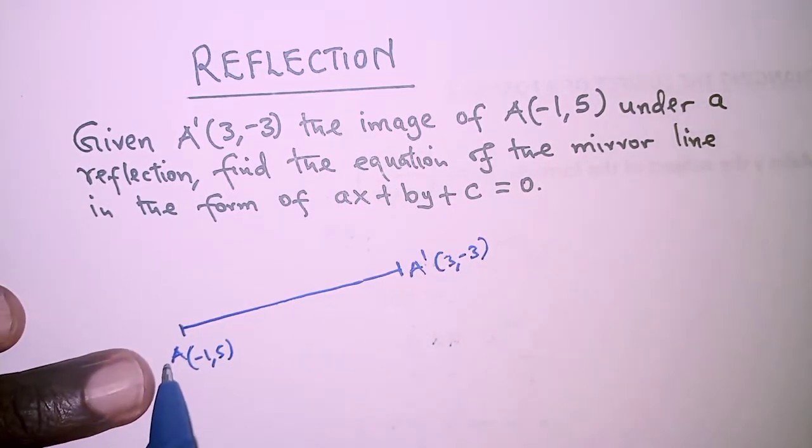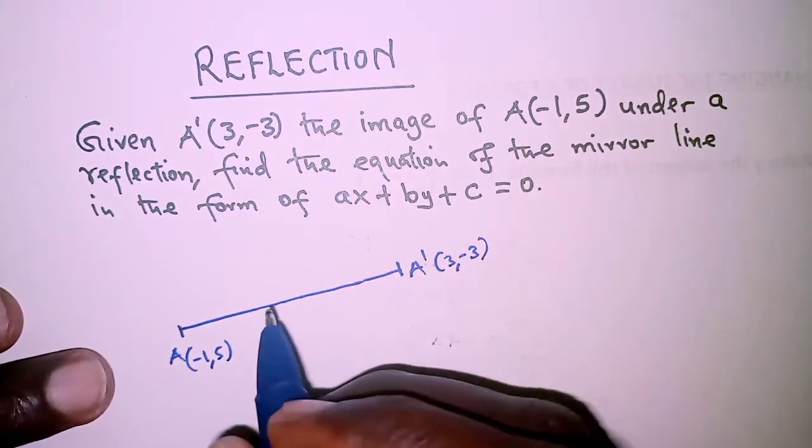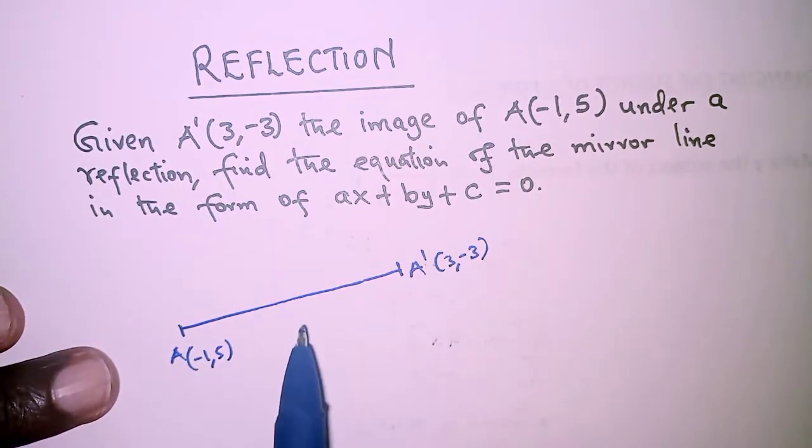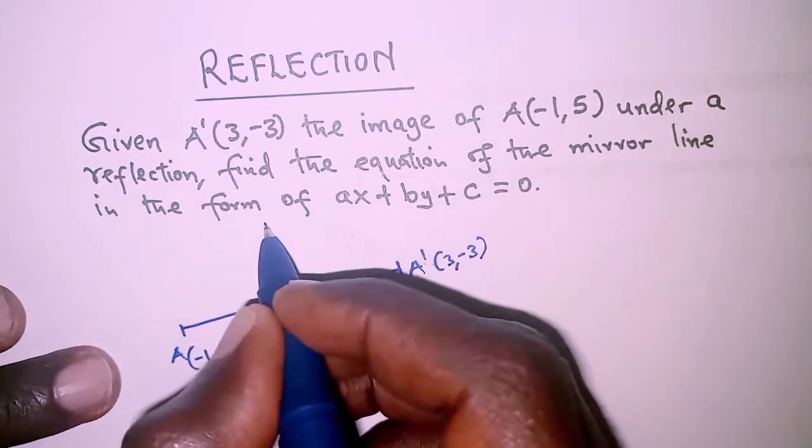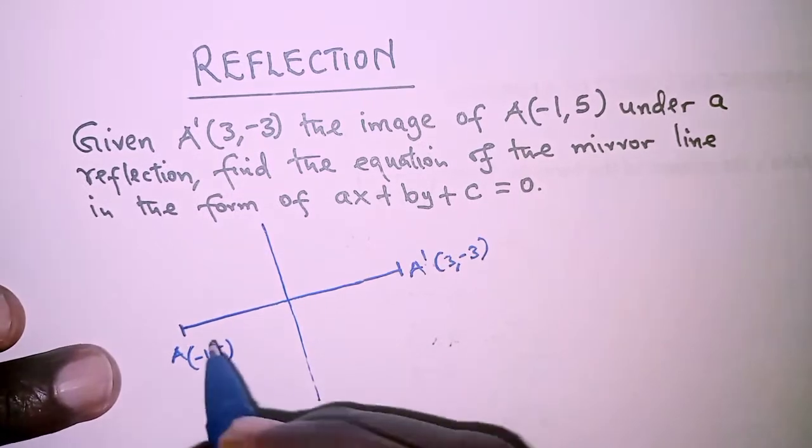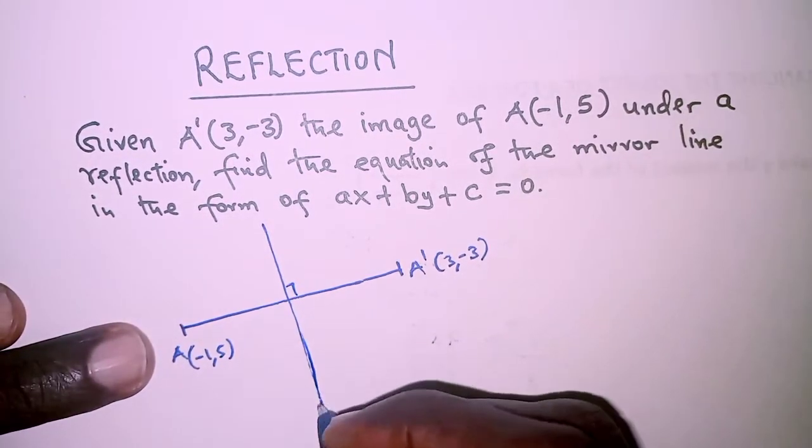So the next thing is to locate the position of the mirror line, but we know that the mirror line will have to bisect the line AA prime.